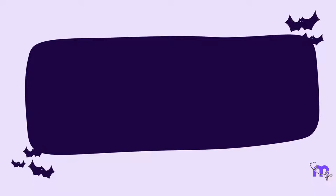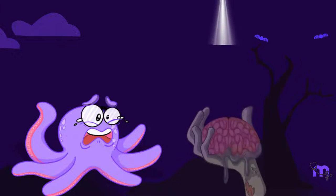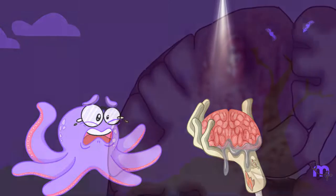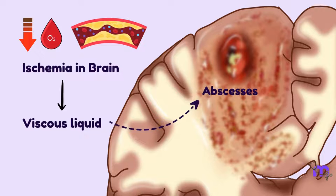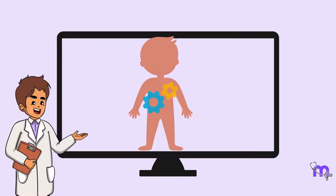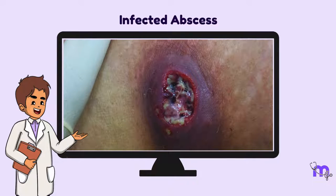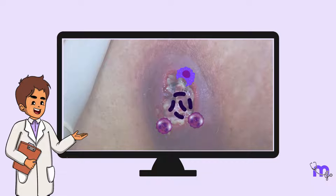The next type of necrosis is liquefactive necrosis. How gruesome does a melting brain sound? For obscure reasons, ischemia in the brain turns it into a viscous liquid forming abscesses. It can also occur in other parts of the body using a different mechanism. A classic example is an infected abscess in soft tissue filled with pus — the pus is liquefactive necrosis. It is caused by organisms that recruit inflammatory cells, a rich source of enzymes that digest tissue.